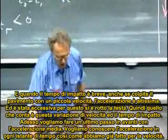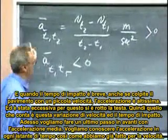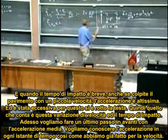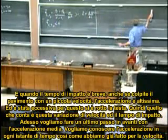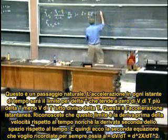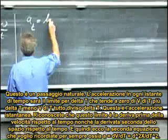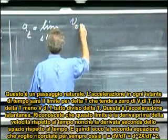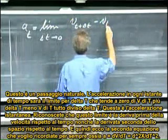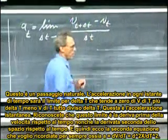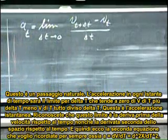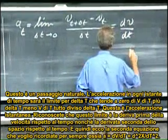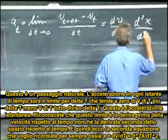We now want to make one last step from average acceleration. We want to go to the acceleration at any moment in time, just the way we did that with velocity. And that now is a natural step. The acceleration at any moment in time would be the limit for delta T goes to zero for V measured at T plus delta T minus VT divided by delta T. So that is the instantaneous acceleration. And this, you will recognize, is the first derivative of velocity versus time, which is also the second derivative of position versus time.